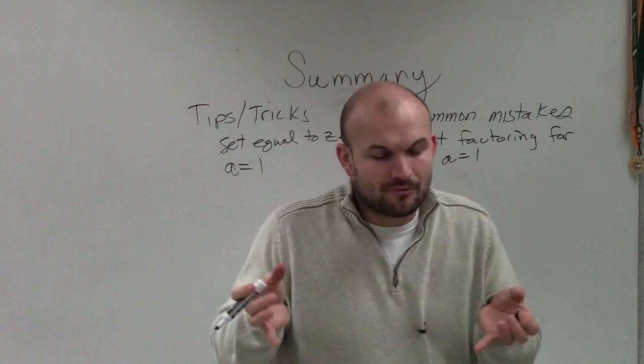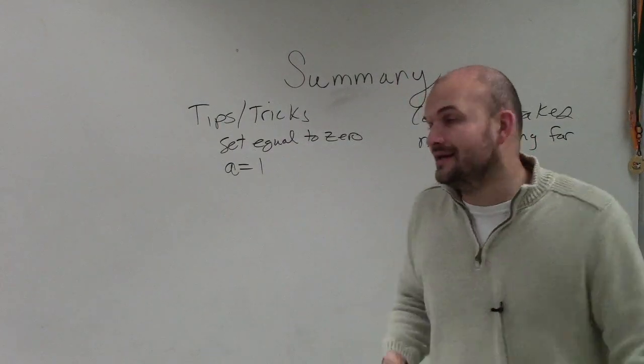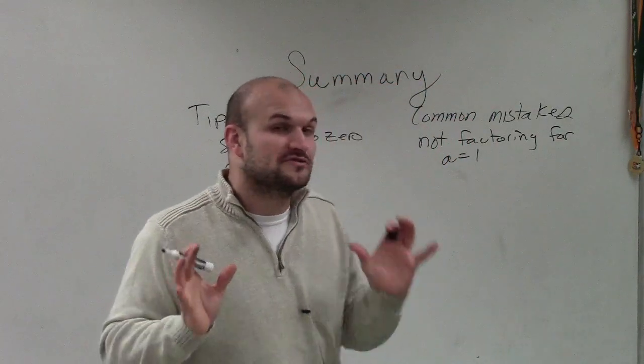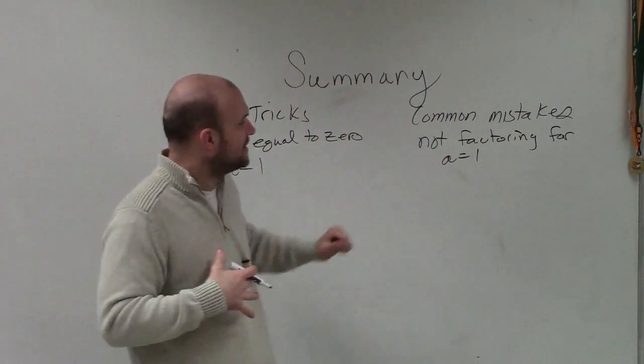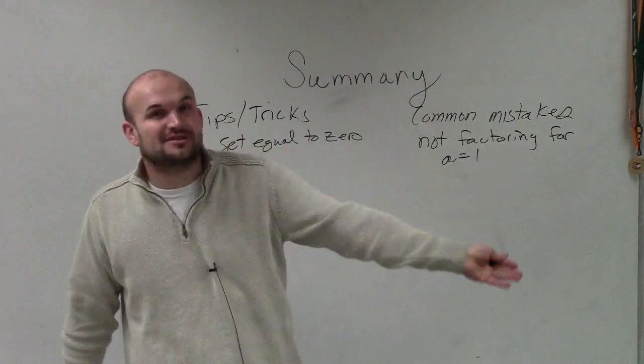But when we're completing the square, we want to get our a, which is our coefficient, to be equal to 1. So one of the tips and tricks, make sure you factor that out of those first two terms the way that I like to go through it, rather than not factoring out and then trying to complete the square that way.